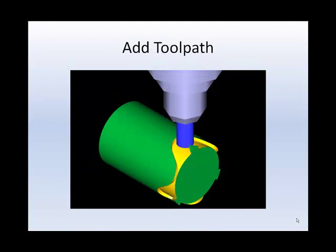Select Toolpaths, Contour. Select the Flat Entity. Chain from Back to Front to Climb Cut. Select a 1.5 inch end mill and set your cut parameters.